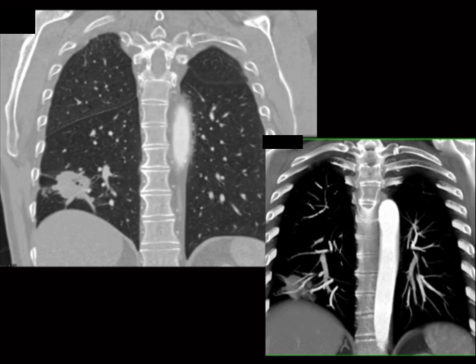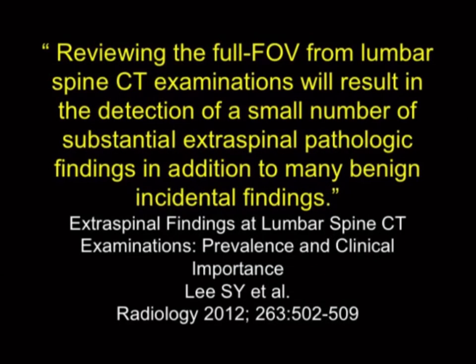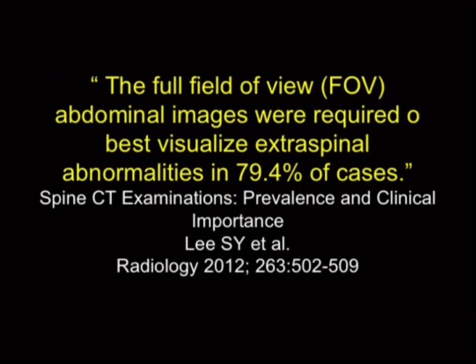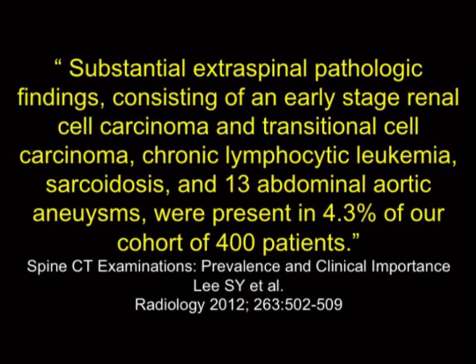This issue isn't just in the chest. A great article by Lee made the point that unless you look at the full field of view on lumbar or spine CT exams, you're going to miss significant findings. Extraspinal findings were present in 40% of adult outpatients undergoing lumbar spine CT for back pain. Most weren't very significant, but 4.3% had important findings including renal cell carcinomas, TCCs, CLL, sarcoid, and aortic aneurysms. Perhaps the reason for the patient's back pain is not a lumbar disc, but an aortic aneurysm — you need to reconstruct the full field of view.